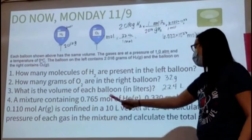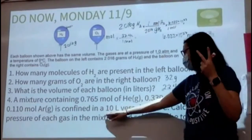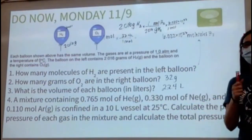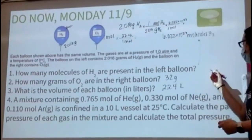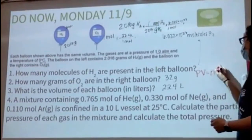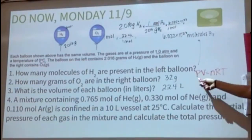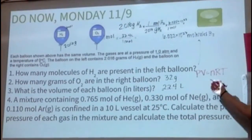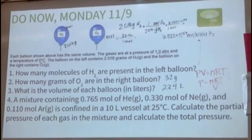Ignoring neon and argon for now, I have moles of helium, volume of the container, and temperature. I'm solving for pressure, so I can use the ideal gas law: PV = NRT, solving for P gives P = NRT/V. R is the ideal gas constant; for pressure in ATM use 0.08206. Temperature must be in Kelvin and volume in liters.